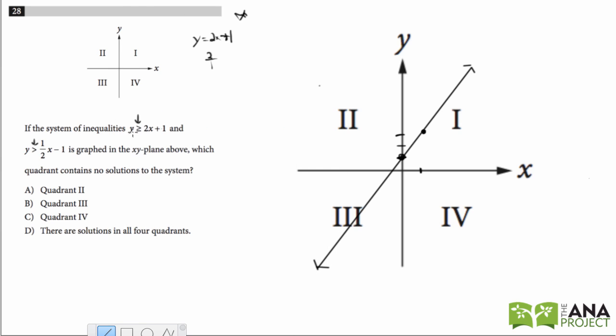So what does greater than or equal to 2x plus 1 mean? It means all the solutions to the system, to this line, everything is above this line. It's greater than or equal to. So nothing here on the bottom but the top.